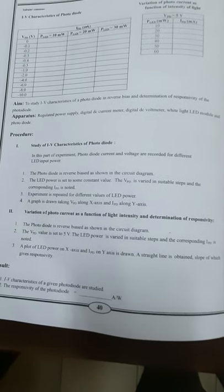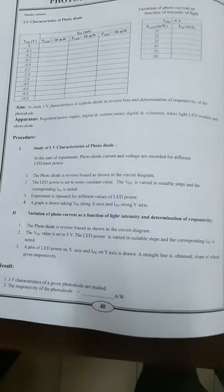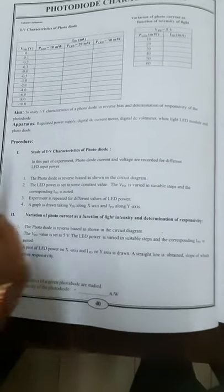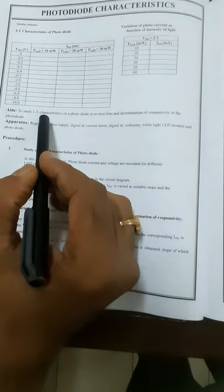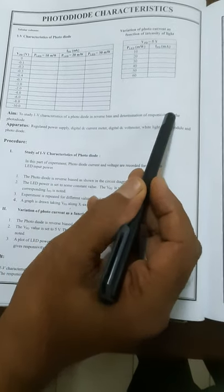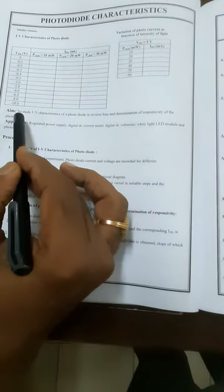A photodiode is a device used to convert light energy into electrical energy. We are studying the IV characteristics of a photodiode and hence the determination of responsivity of a photodiode.